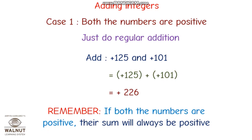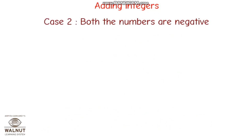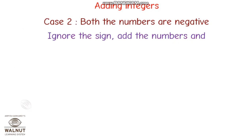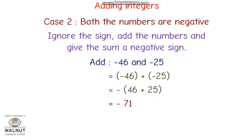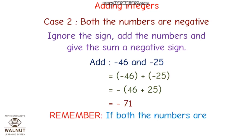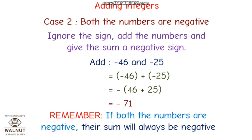Second case: both numbers are negative. Ignore the sign, add the numbers, and give the sum a negative sign. For example, minus 46 and minus 25 — take minus as a common factor and write minus of 46 plus 25. So 46 plus 25 is 71, giving minus 71. If both numbers are negative, their sum will always be negative.